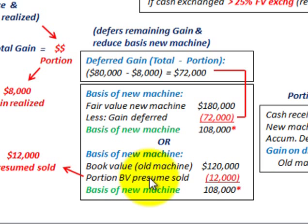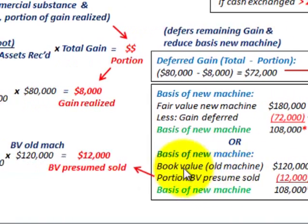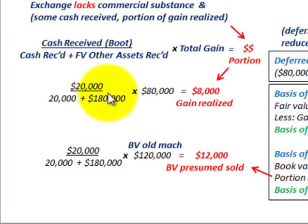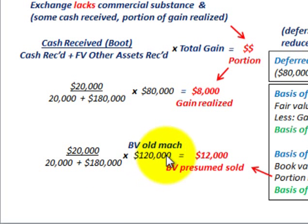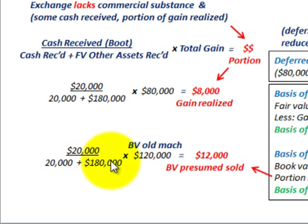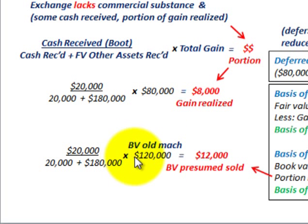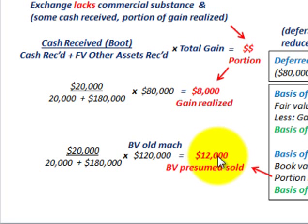Let's look at how the portion of the book value presumed to be sold was calculated. We go back to the same fractional equation: cash received divided by cash received plus the fair value of the new machine received. We take that fractional amount times the book value of the old machine, which is $120,000. That fractional amount times $120,000 gives us the book value of the amount presumed to be sold at $12,000.